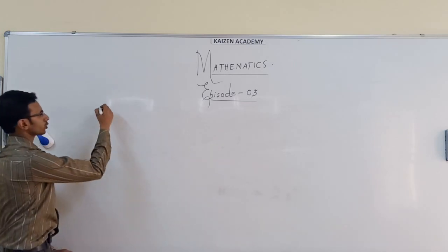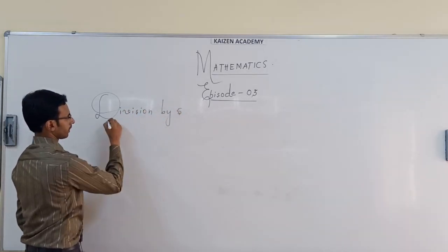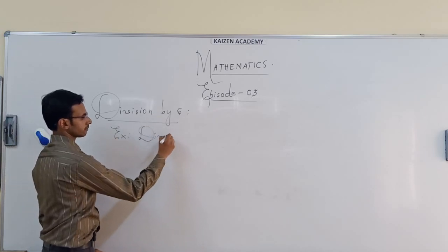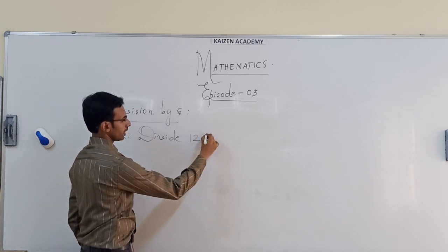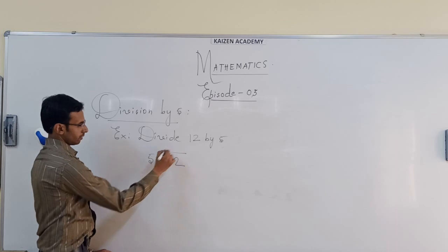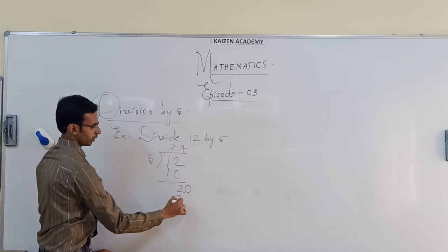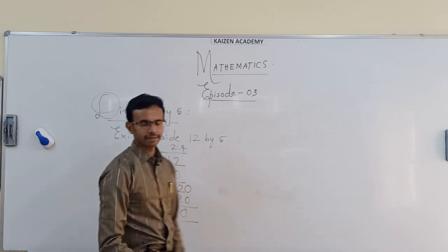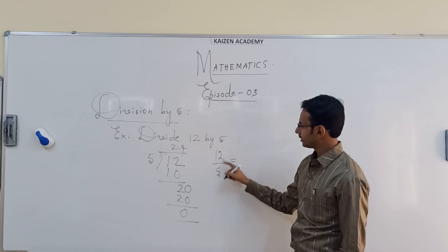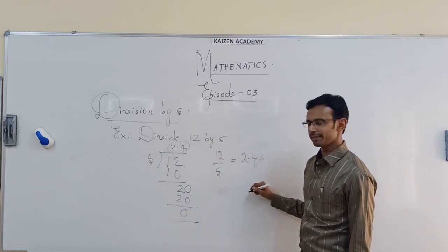Coming to division — is there a shortcut for division also? Yes — division by 5. This is utilized to divide any number by 5. Suppose I take 12 divided by 5. The normal division process gives 2 remainder 2, then placing a decimal point and continuing gives 2.4. But what if I tell you this answer in just two seconds? Whatever number you are dividing by 5, just double it — 12 plus 12 is 24 — and put the decimal point before the last digit, giving 2.4. Don't you think this is amazing?